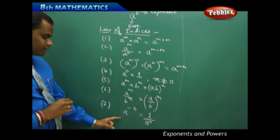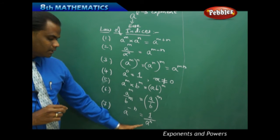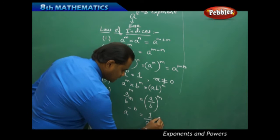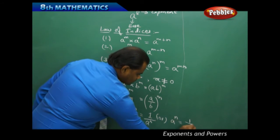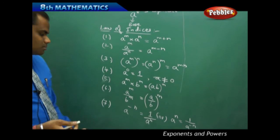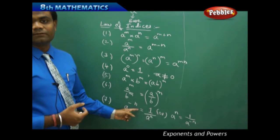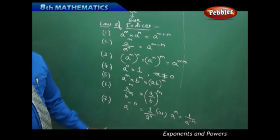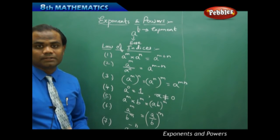The seventh law of indices states that a raised to the power negative n equals 1 over a power n. Conversely, a raised to power n equals 1 over a raised to negative n. These properties are used when a base is raised to a negative power.